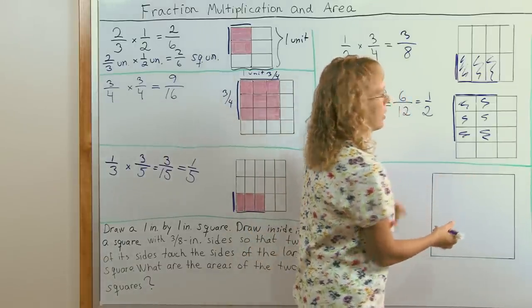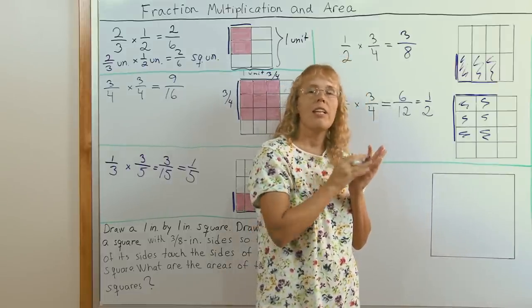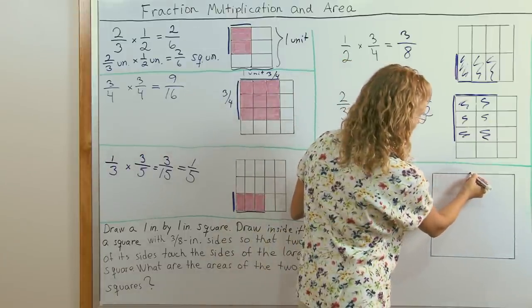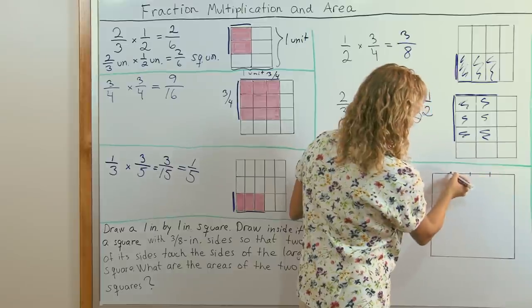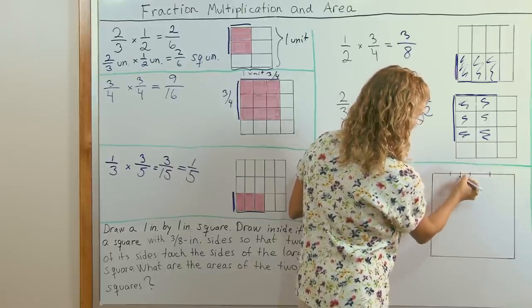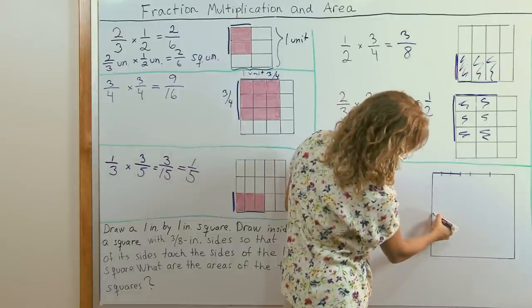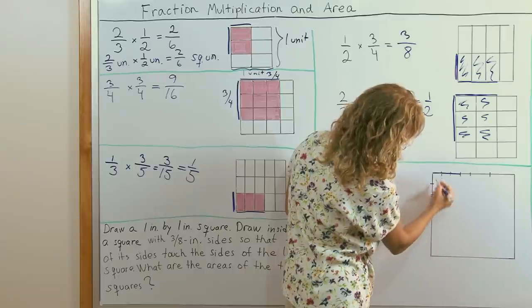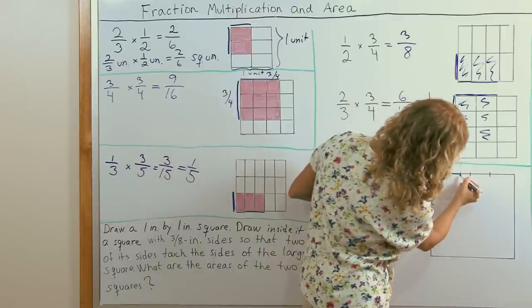So now students will have a ruler where they can measure three eighths of an inch. I don't have it now, but I can approximately try to divide this into eight parts. If this is my one inch side, there. This much would be three eighths. Then over here, there's the half mark, fourths, eighths, and here, about this much.